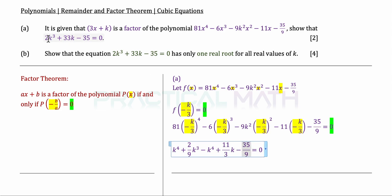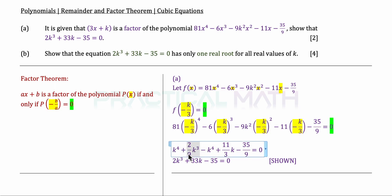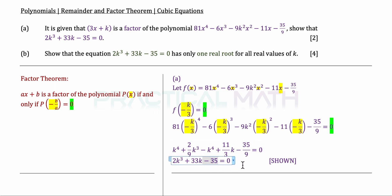We simplify all of this by keying it into our calculator, giving us the result where k to the power of 4 cancels out, leaving us officially with a k cubed term, a k term, and a constant. We can check we are in the right direction — the coefficient of k cubed is 2 over 9, so we proceed by multiplying throughout by 9. This gives 2k cubed plus 33k minus 35 equals 0, which is the required statement shown.